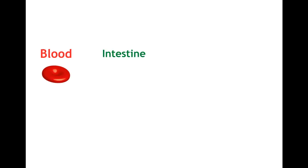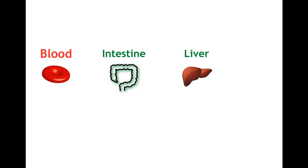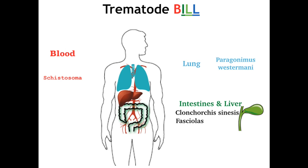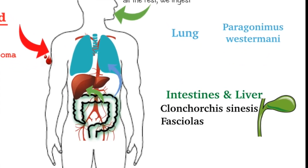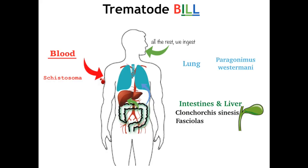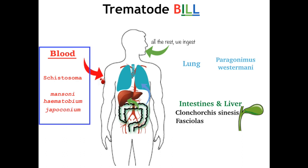Although named for where they reside, all flukes involve all four systems either in their life cycle or pathology. The blood flukes stand apart because they are not hermaphrodites like the rest, and their route of entry is by direct penetration of skin — the rest are ingested orally. The others involve the GI tract because they are ingested and migrate either to the biliary tree for Clonorchis and Fasciola, or to the lung for Paragonimus.